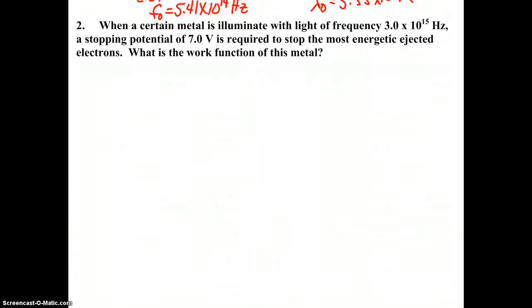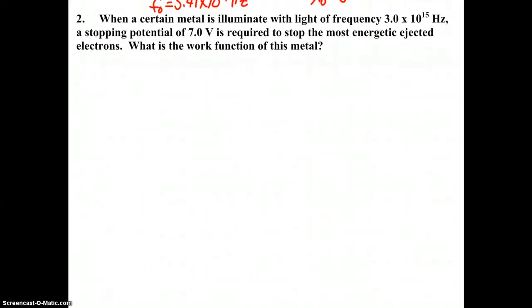Number two: when a certain metal is illuminated with light of frequency 3 times 10 to the 15th hertz, that's our f value, the incident frequency of the light. A stopping potential of 7 volts is required to stop the most energetic ejected electrons. What is the work function phi of this metal?